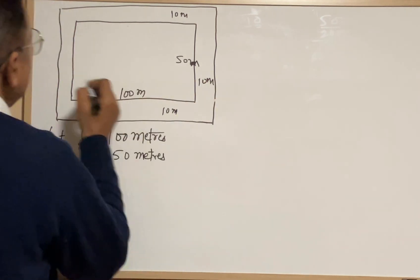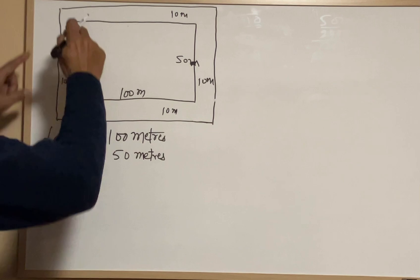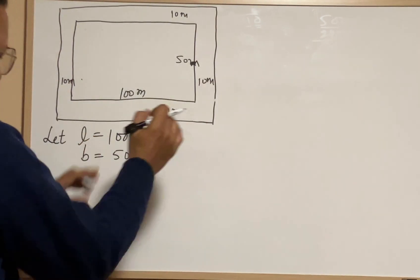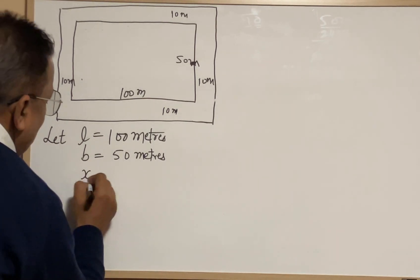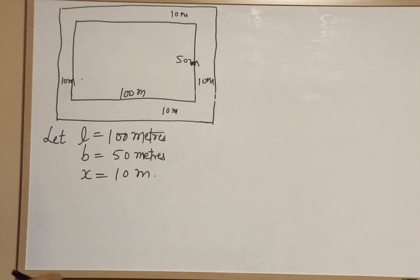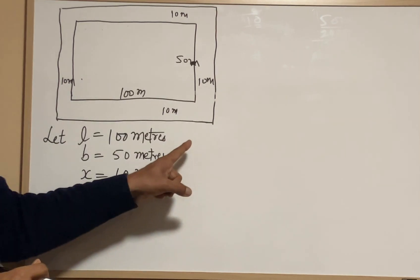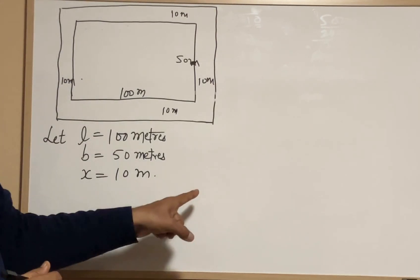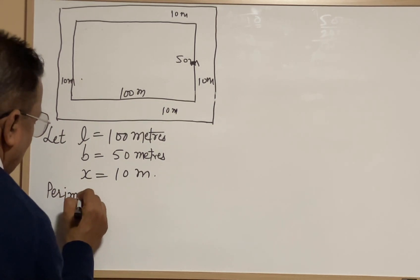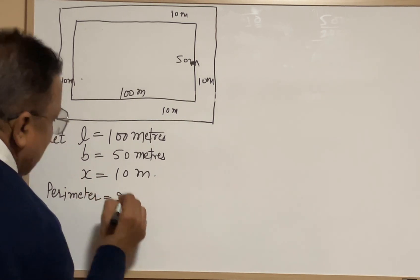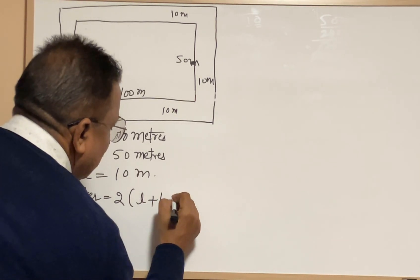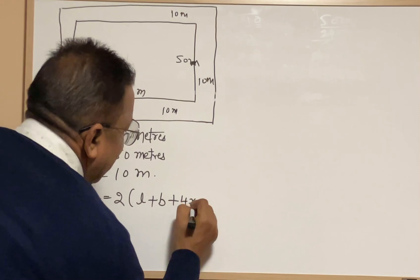The width of the path is 10 meters. This is the special method to find the perimeter of the outer figure — that is, the outer part. Now x equals the width of the path, which is 10 meters. The perimeter of the outer part equals twice the quantity of length plus breadth plus four times the width of the path.